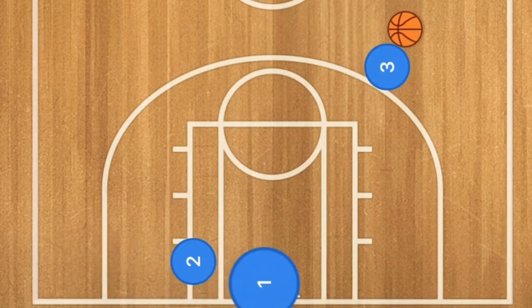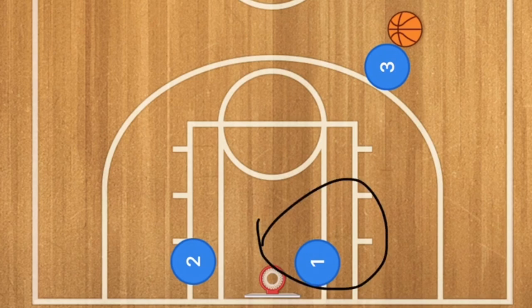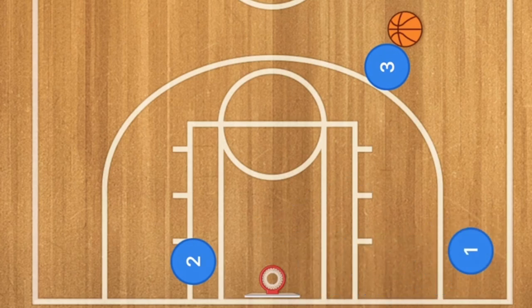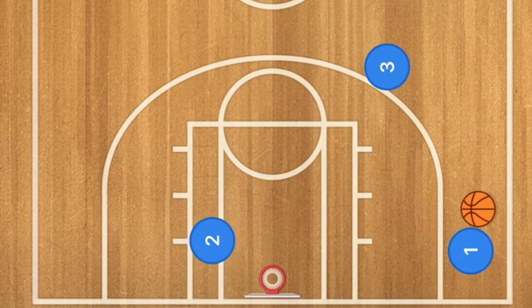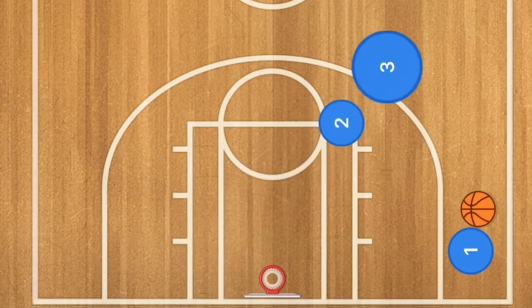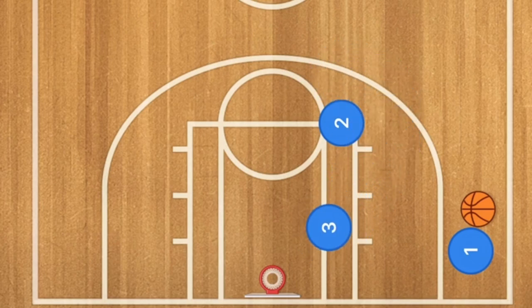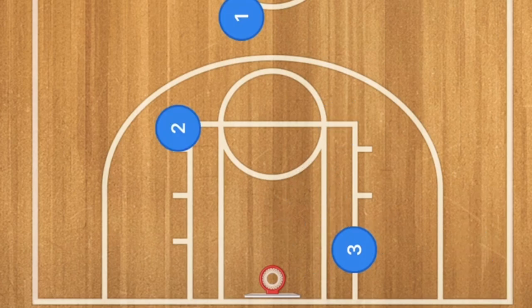Player one uses player two as a screen and could be open in the post for a quick layup, or continue through for a three-point shot. After player two finishes the screen, he can go up and back screen for player three, who can use that screen and cut towards the rim for an open layup.